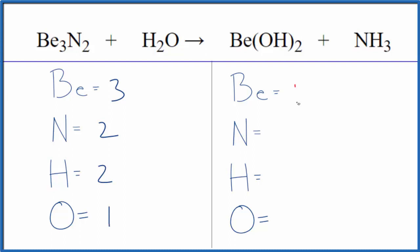Product side we have the one beryllium, the one nitrogen, and then for the hydrogens we need to be careful. We have 2 times 1, that's 2, plus the 3 with the ammonia, that gives us 5. For the oxygens we have 2 times 1, that gives us 2. So this 2 goes to everything here in the parentheses.